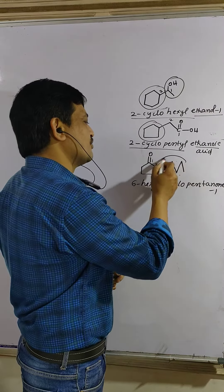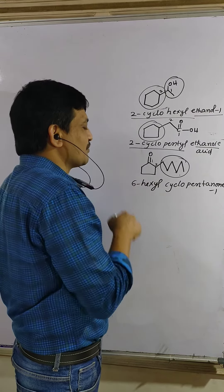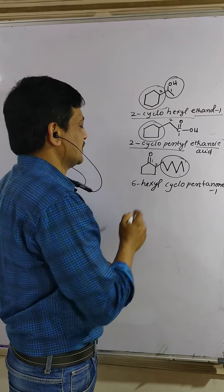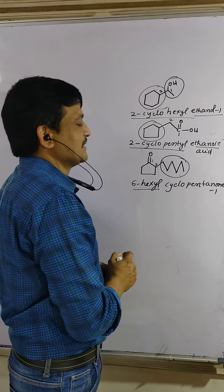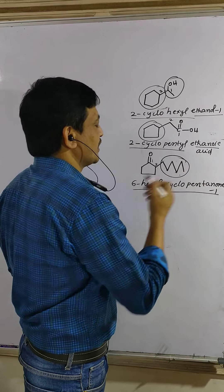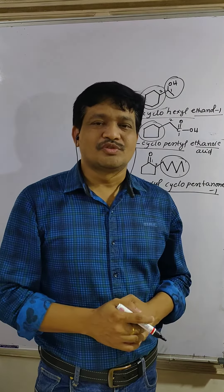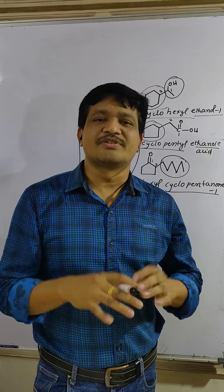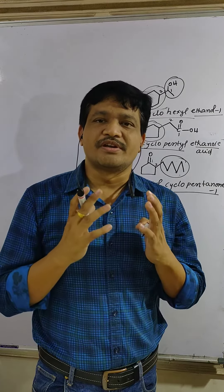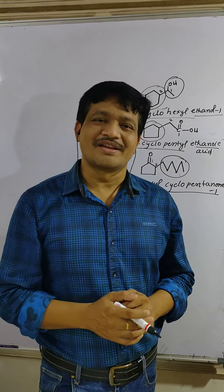Here outside there are more carbons compared to the ring, but the ring contains the functional group, so priority is given to the ring. Six carbons outside, cyclopentanone-1. So whether more carbons or less carbons, don't worry — first priority is given to the functional group. Is it clear students? Thank you.